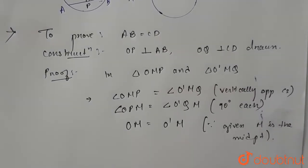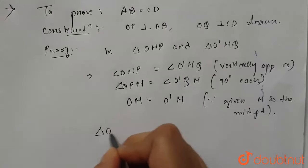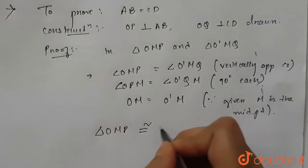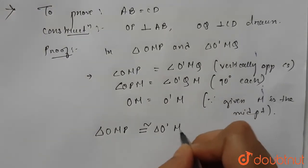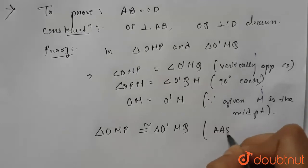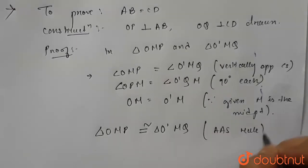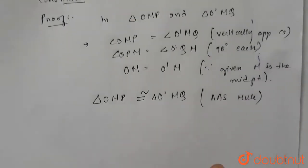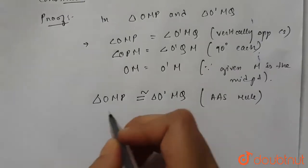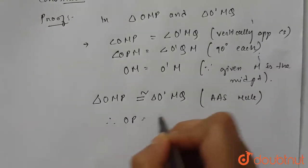Now from these three we can say triangle OMP is congruent to triangle O dash MQ using the AAS property. Now from here we can write therefore OP will be equal to O dash Q using CPCT, that is corresponding part of congruent triangles.